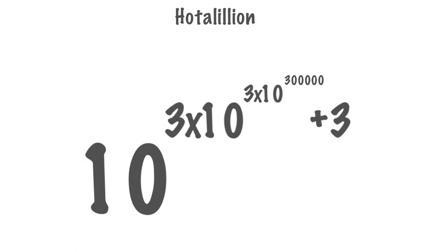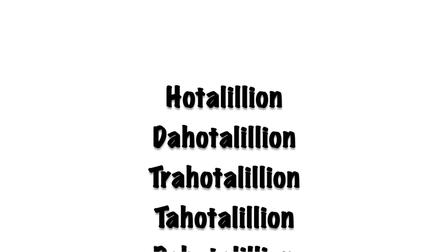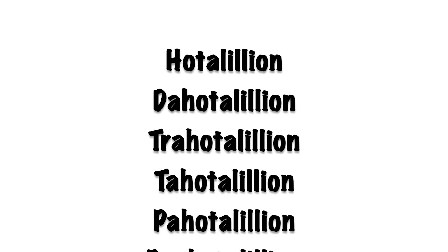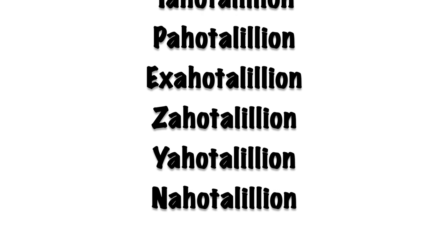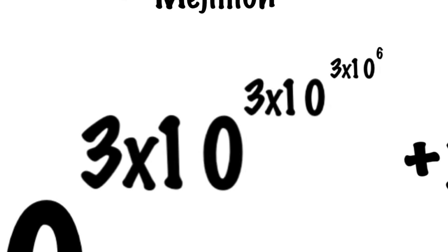As you may expect, the next thing to do is work your way up through the 100,000s, so you count Da-Hata Lillion, Tra-Hata Lillion, Ta-Hata Lillion, Pa-Hata Lillion, Exa-Hata Lillion, Za-Hata Lillion, Ya-Hata Lillion, Na-Hata Lillion. Of course, Na-Hata Lillion corresponds to 900,000, which means that we are jumping to the next tier.